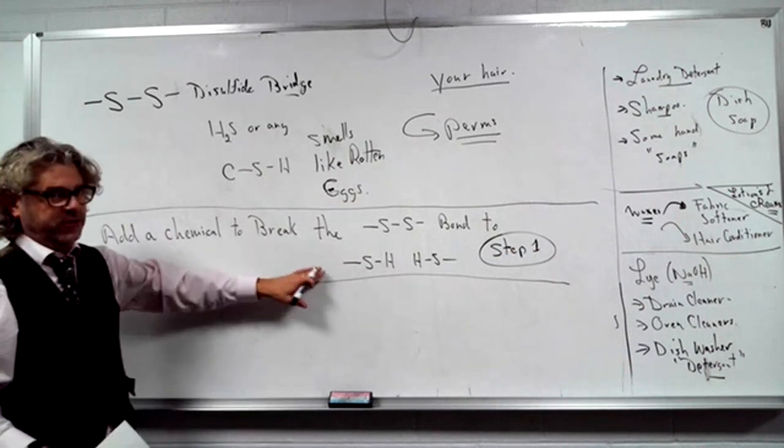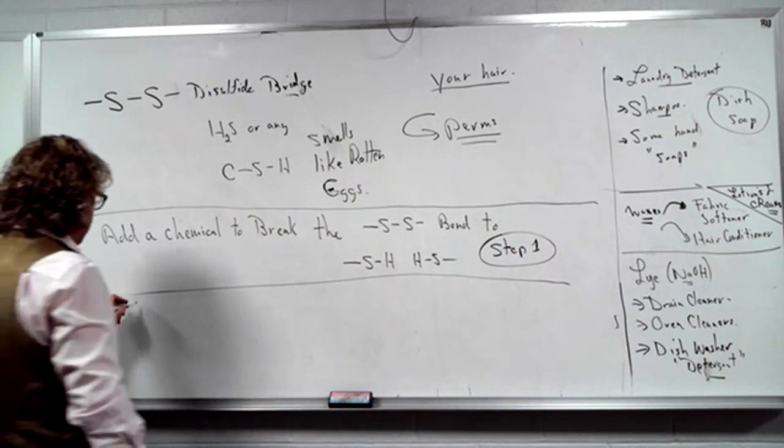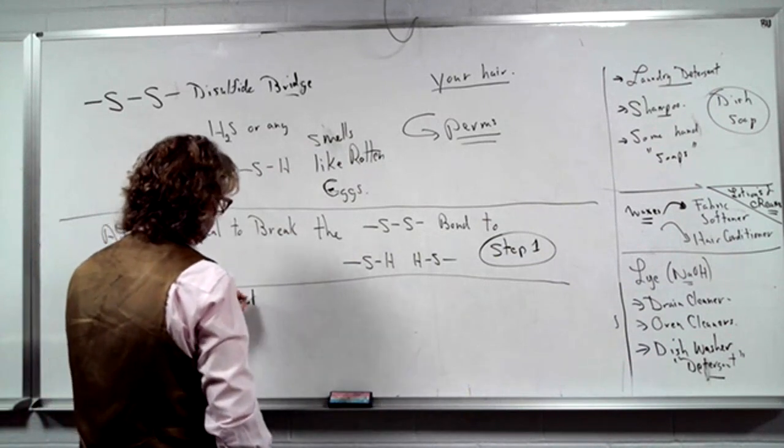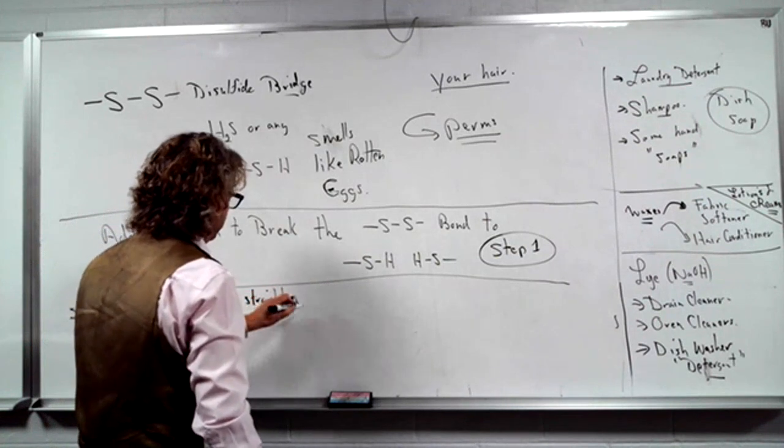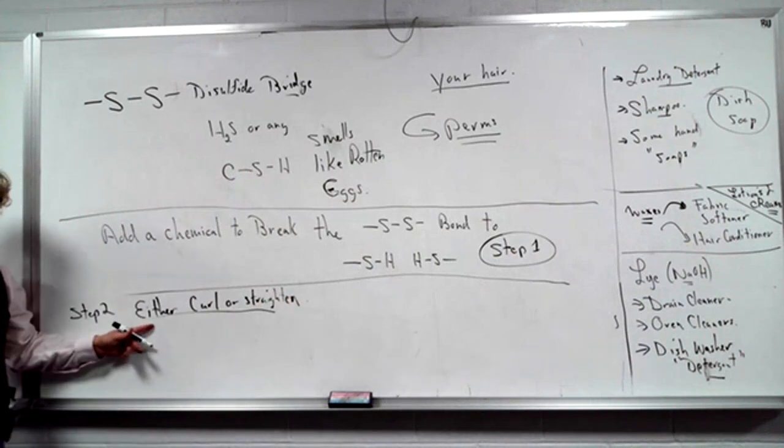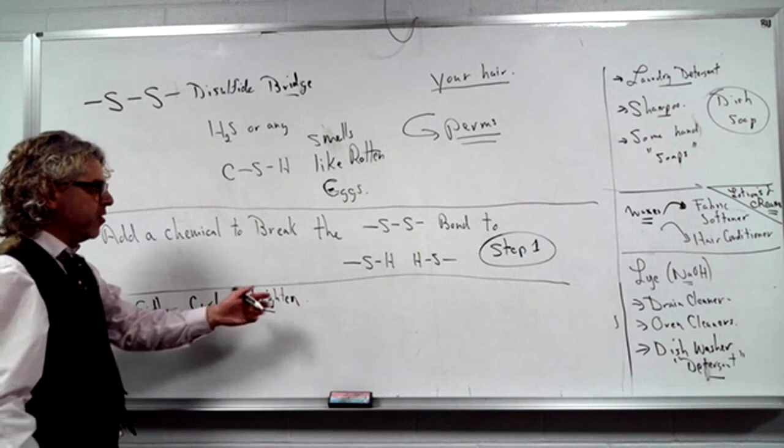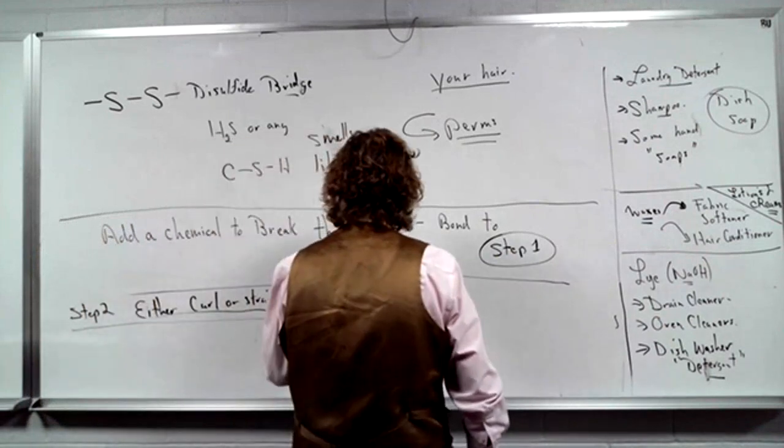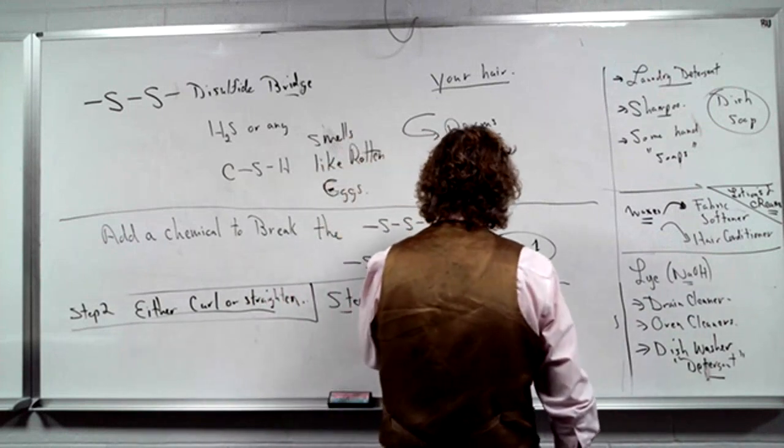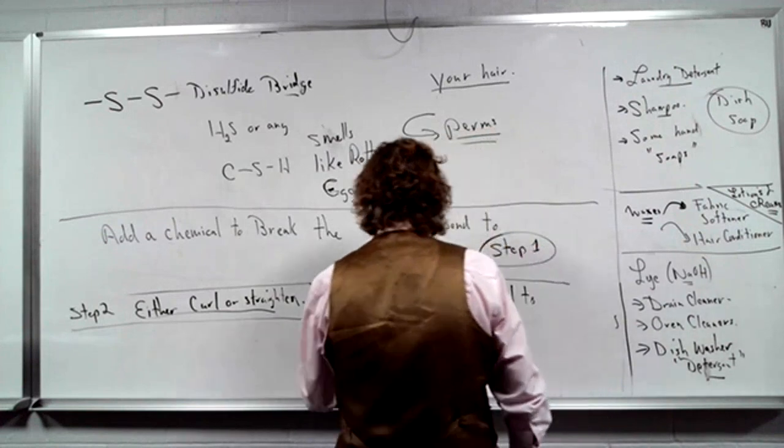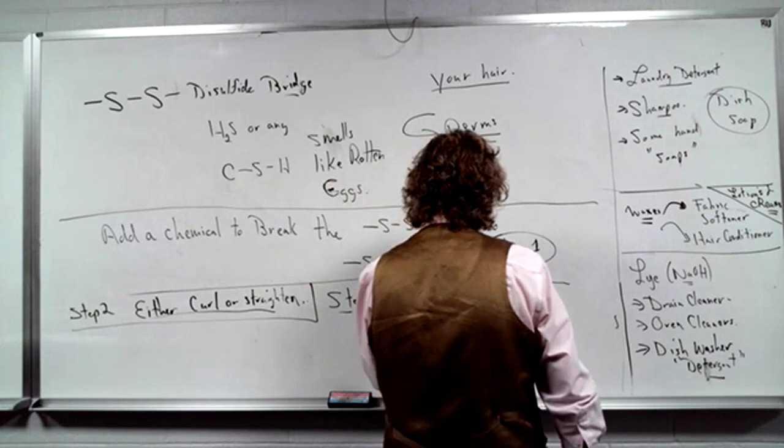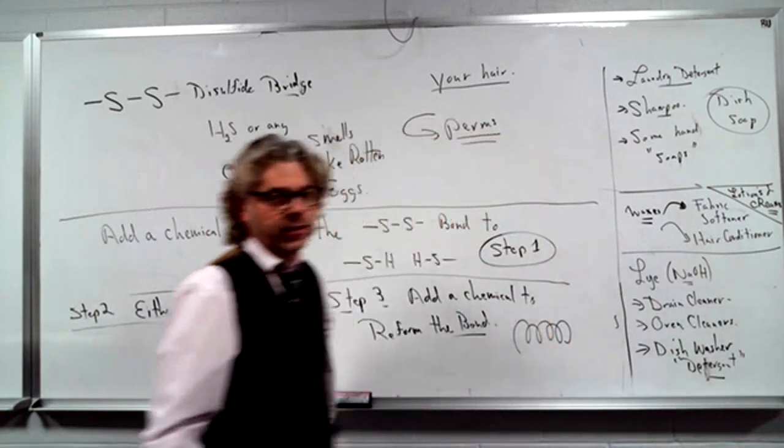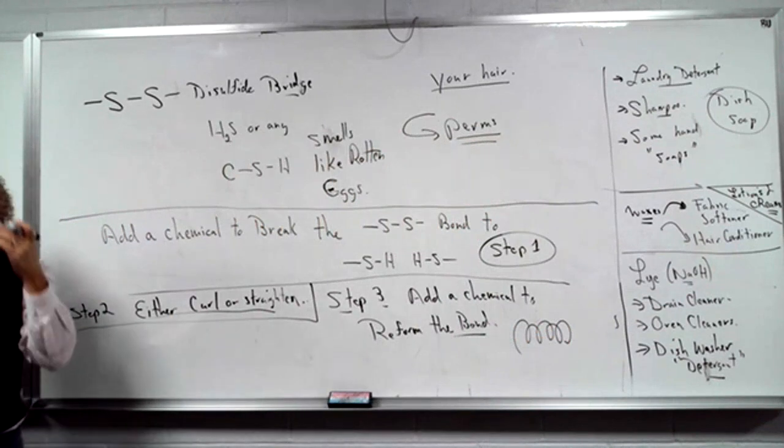So then what do you do? Then you, either, step two, curl or straighten depending on what they want you to do with your hair that year and what you've been reading. You either curl or straighten your hair. So you take this person who has straight hair, you break all these bonds and make it smell, and you curl it up. And then you can guess what step three is. You add a chemical to reform the bond. So you're going to reform the sulfur-sulfur bridge, but now you're reforming it when the hair is inside of a curler. So it's not really permanent, but it definitely will last a pretty long time.